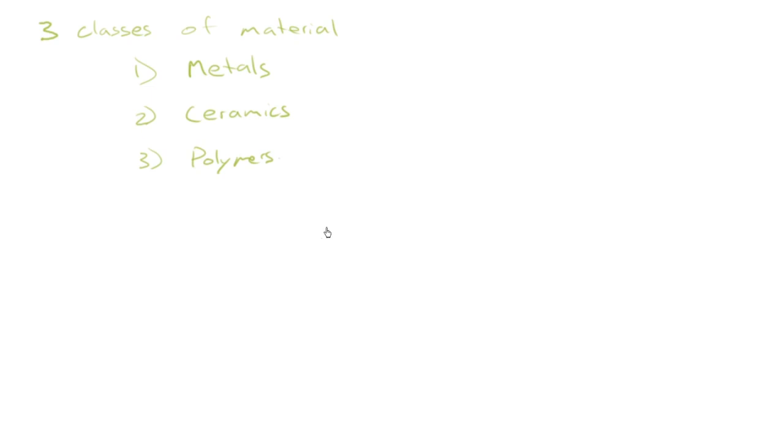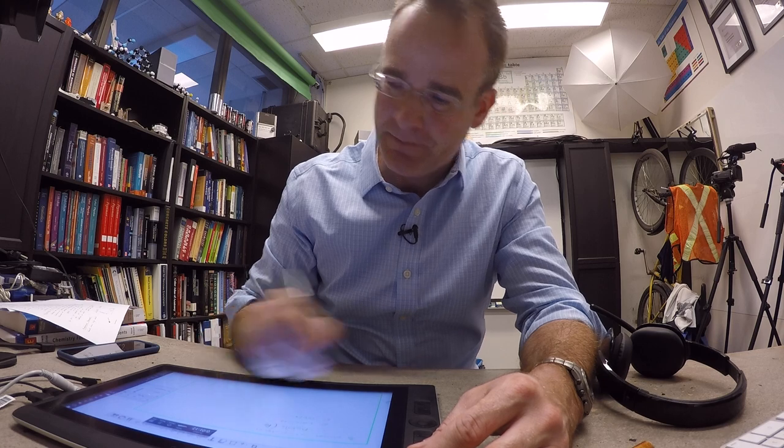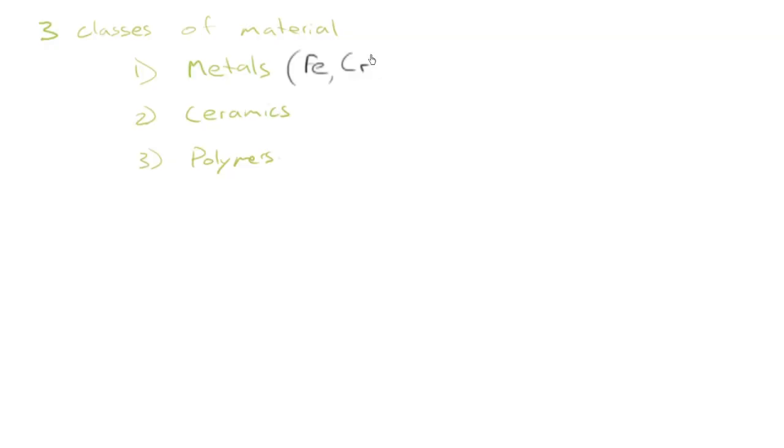So metals, let's see, we'll start with maybe some examples. Iron—my iron ring, stainless steel. It's mostly iron, it's got some chromium.